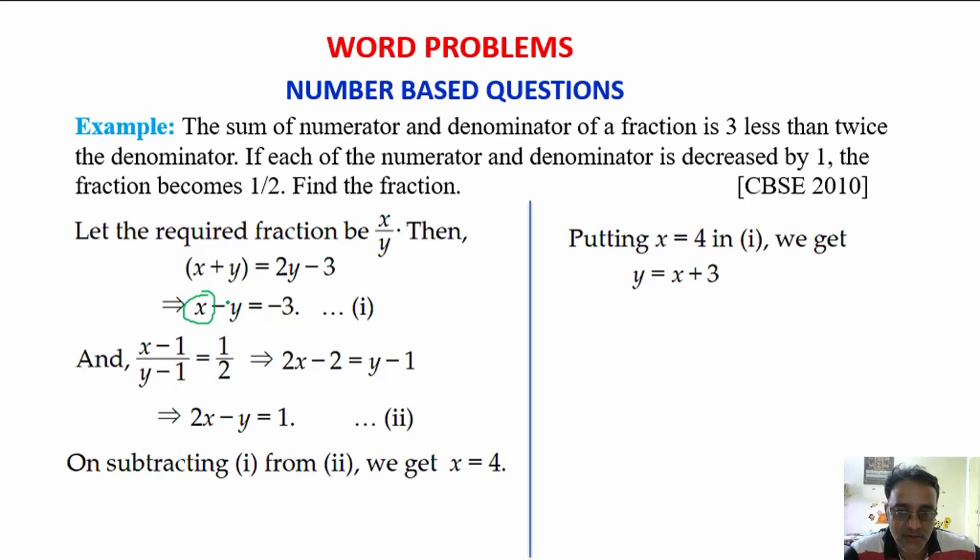We will substitute 4, so 4 minus y is equal to minus 3. Before that, let's do this in an easy way. Interchange these two. So, minus 3 will become plus 3 and minus y if you shift to this side it will become plus y. So, we will get y is equal to x plus 3.